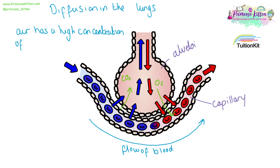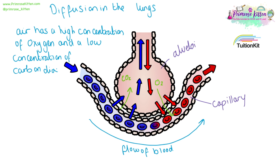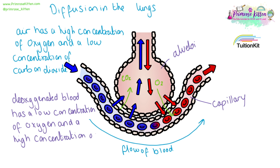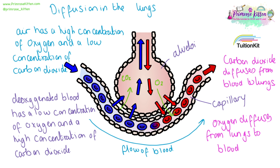Air has a high concentration of oxygen and a low concentration of carbon dioxide. Deoxygenated blood, that we can see in blue here, has a low concentration of oxygen and a high concentration of carbon dioxide. So we will see oxygen diffusing in and carbon dioxide diffusing out — oxygen will diffuse from the lungs into the blood, whereas the carbon dioxide will diffuse from the blood into the lungs, where it can then be breathed out.